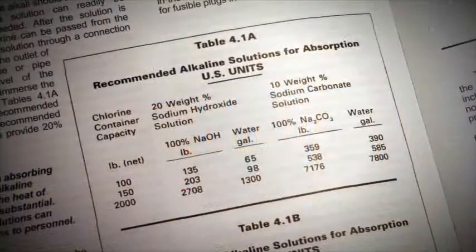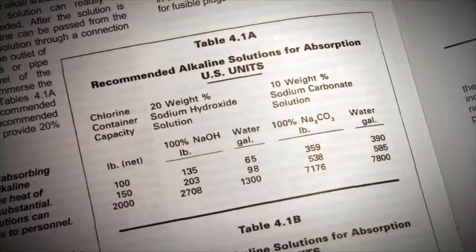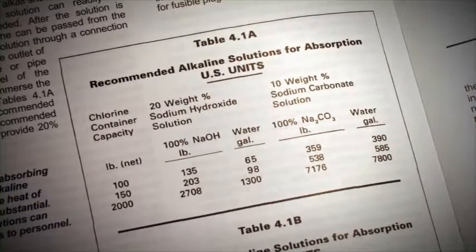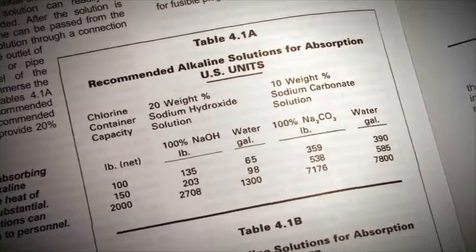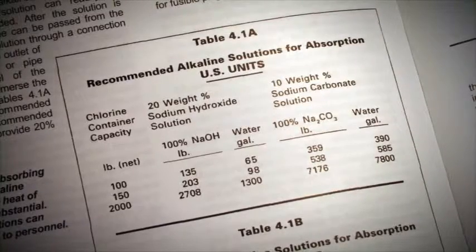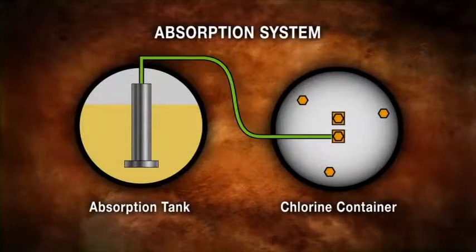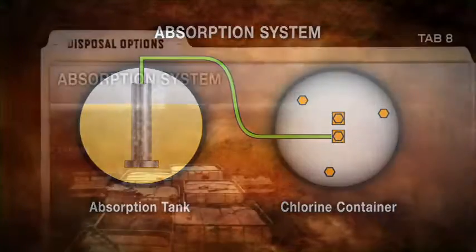This chart shows the recommended alkali quantities. The material of construction of the system must be compatible as recommended by qualified individuals. The chlorine is moved from its container into the solution through a sparger system in the tank.